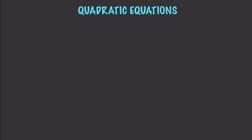An equation that can be arranged in the form of Ax squared plus Bx plus C equal to zero, where A cannot be zero, is what we call a quadratic equation. You can solve them in different ways.